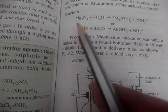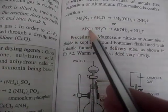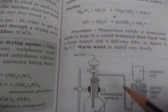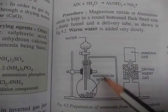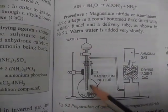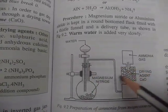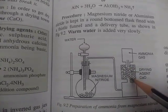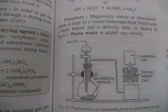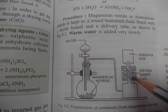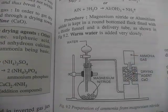Ammonia can also be prepared from magnesium nitride or aluminum nitride. This is the experimental setup: magnesium nitride is there, water is trickled over it, ammonia gas is produced, and again a packing of CaO is there, and ammonia gas will be collected.